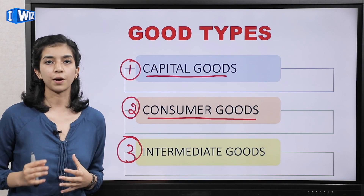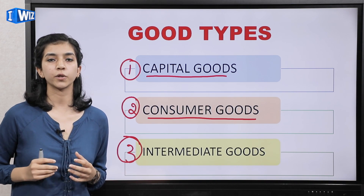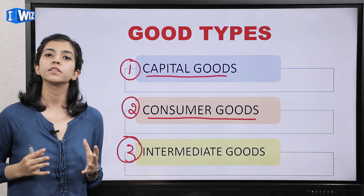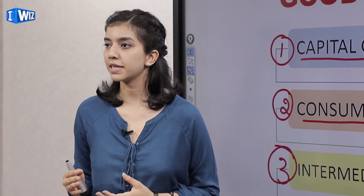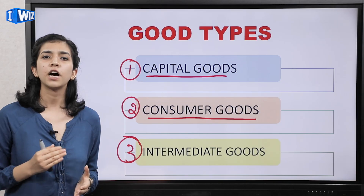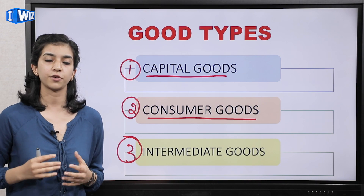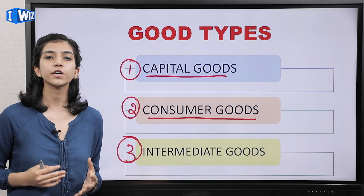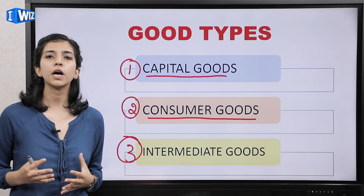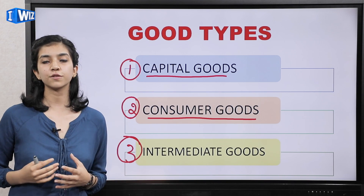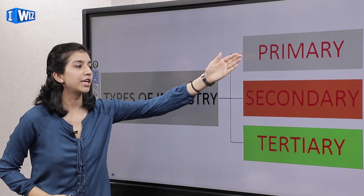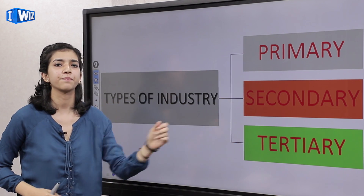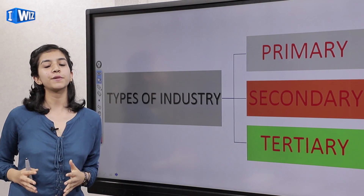For example, rubber — rubber production ho gai, ab wo further different industries mein supply ho jata hai where its further processing is done. For example, if it is a tire-producing industry, rubber will be used to make tires. On the other hand, if it is a stationery industry, erasers will be produced. Now we have types of industries: primary, secondary, and tertiary. I'm going to explain all of them to you in detail with examples.